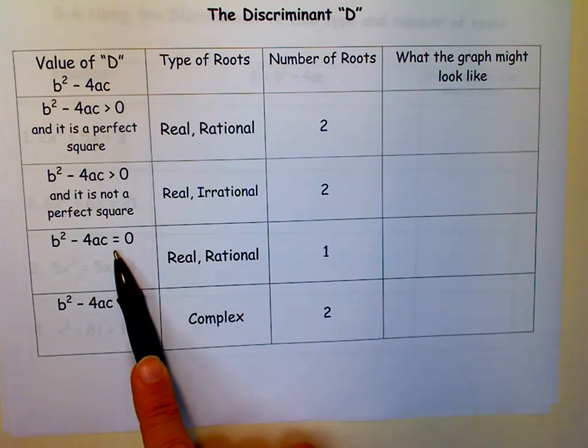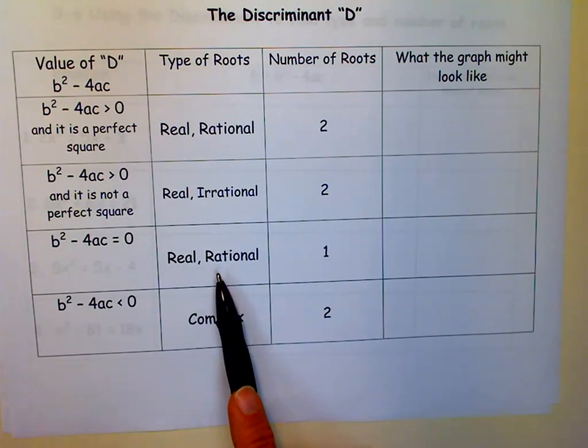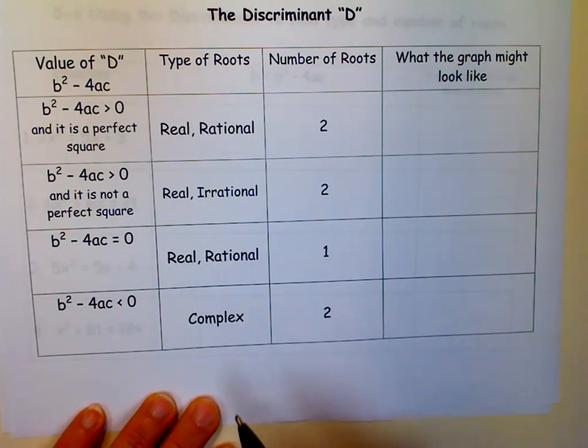If it's equal to zero, the discriminant is equal to zero, you only have one real root. And if it's less than zero, you have two complex roots.